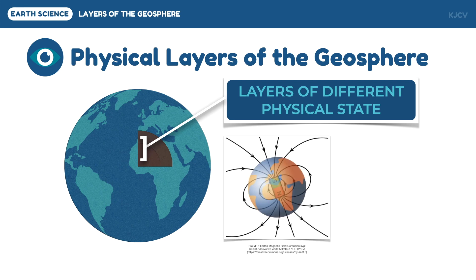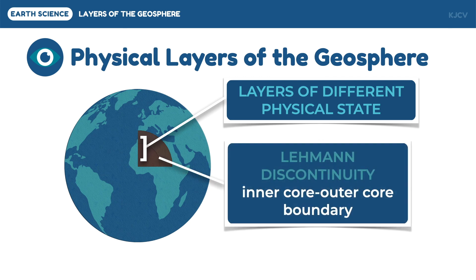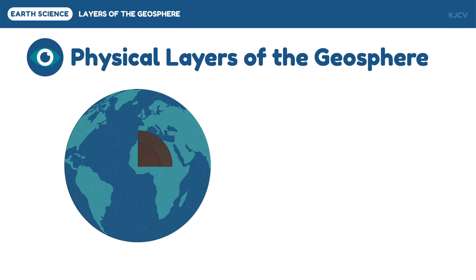The earth's magnetic field interacts with the solar wind and charged particles from the sun that would otherwise be dangerous for its inhabitants. The reaction between the earth's magnetic field and these solar particles is visible near the poles as the aurora australis (southern lights) and aurora borealis (northern lights). The inner core and outer core are bordered by the Lehmann Discontinuity, named after Inge Lehmann, who contributed to the study of the earth's core.